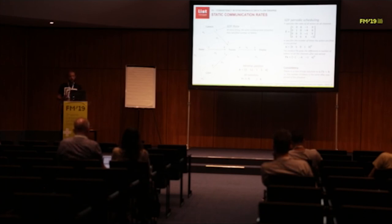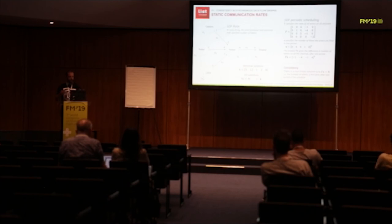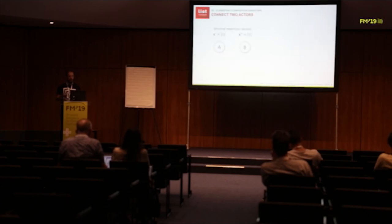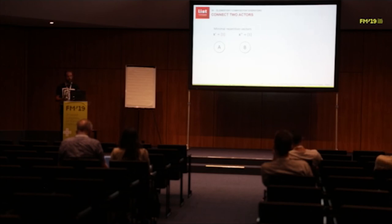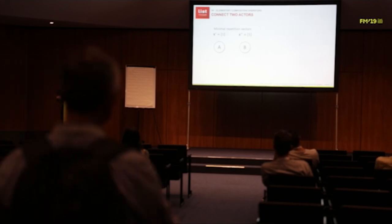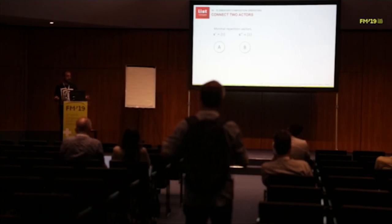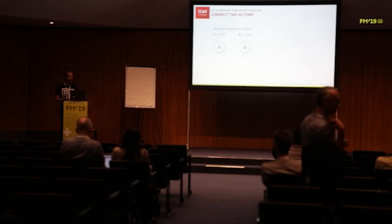The existing approach takes the whole graph and makes this verification on the whole graph. We wanted a more modular approach, so we considered the composition of data flow graphs and detailed elementary composition operators. By convention, when there is only one actor not connected to any other actor, it has a minimal repetition vector of one — since we want to fire the actor at least once, and with no channels, firing it once is the minimal repetition vector.